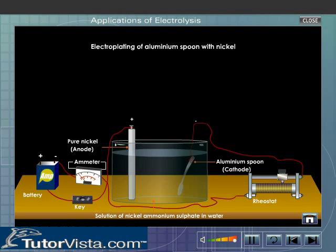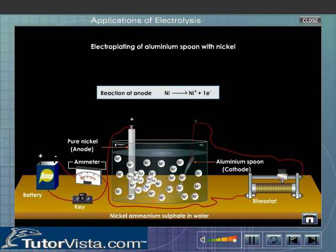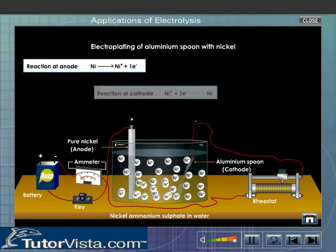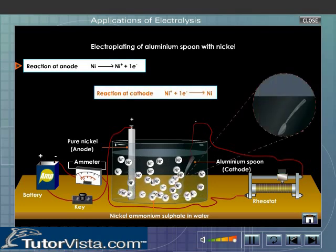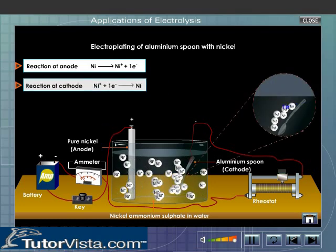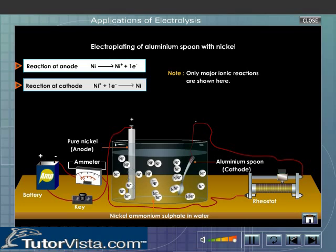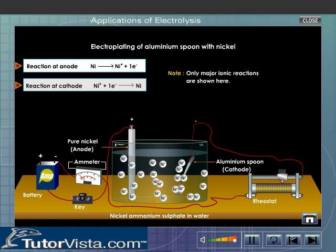A solution of nickel ammonium sulphate in water is used as the electrolyte. When a current is passed, the nickel atoms from the anode lose electrons and enter the electrolyte as nickel ions. The positively charged nickel ions are discharged at the cathode by accepting electrons and get deposited as a thin film of metallic nickel on the aluminium spoon. Thus the aluminium spoon is electroplated with nickel.